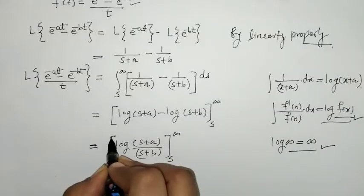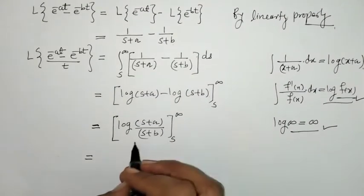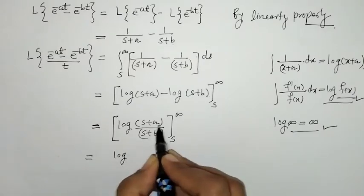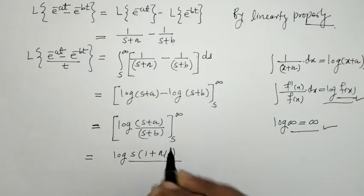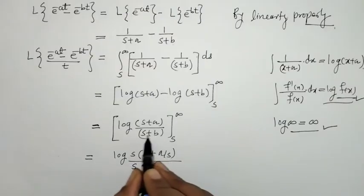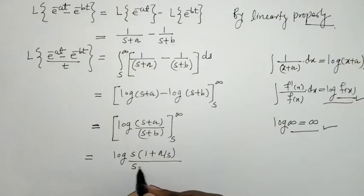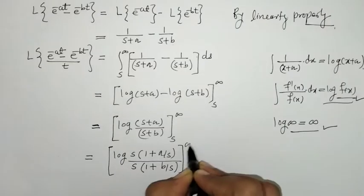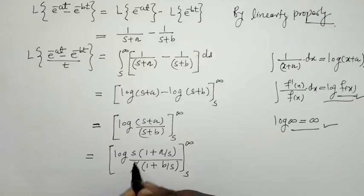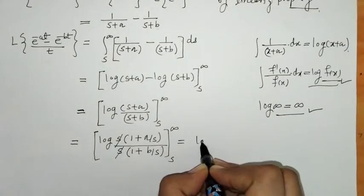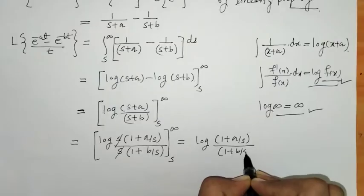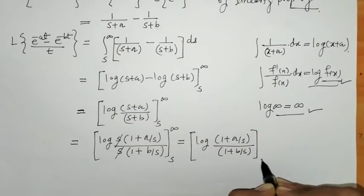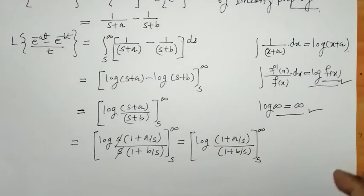We factor out s from both s+a and s+b: s+a = s(1 + a/s) and s+b = s(1 + b/s). After cancelling the s terms, we are left with log((1 + a/s)/(1 + b/s)), evaluated from s to infinity.